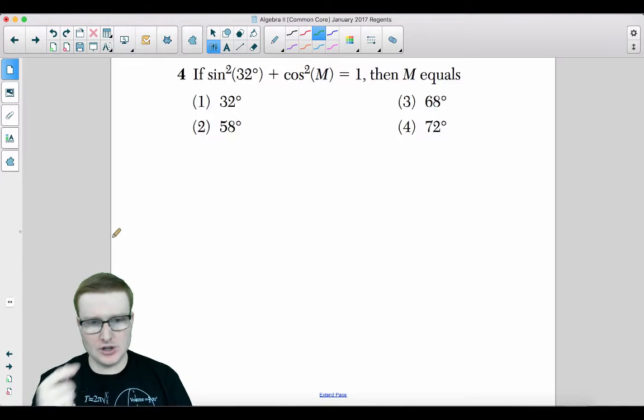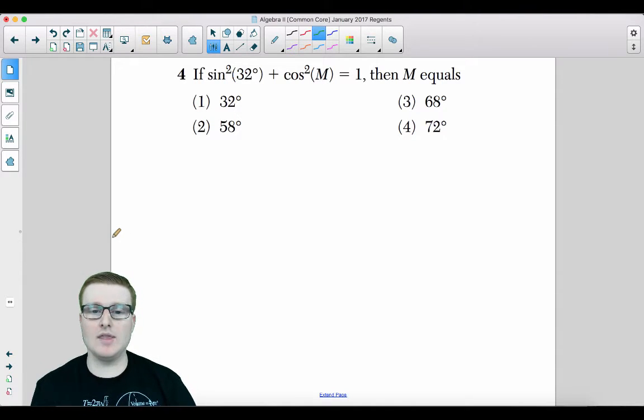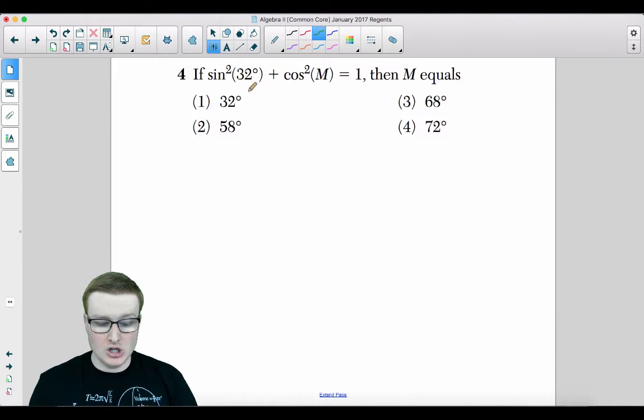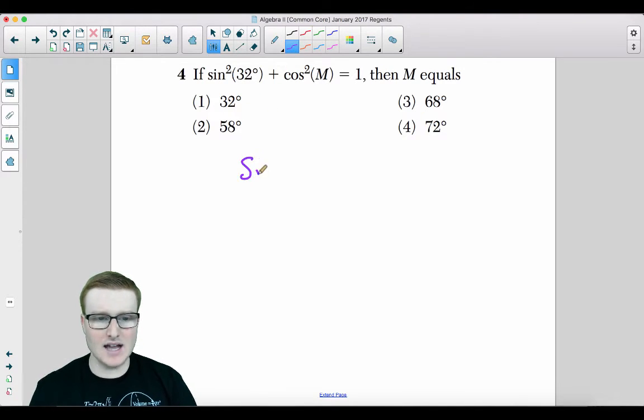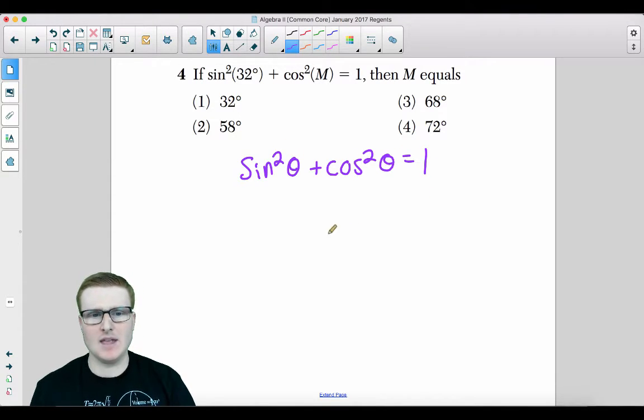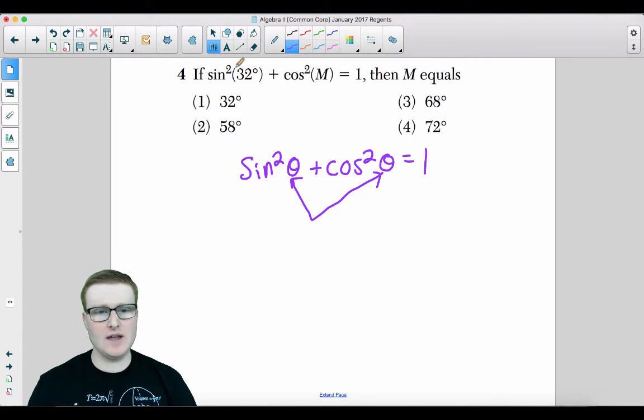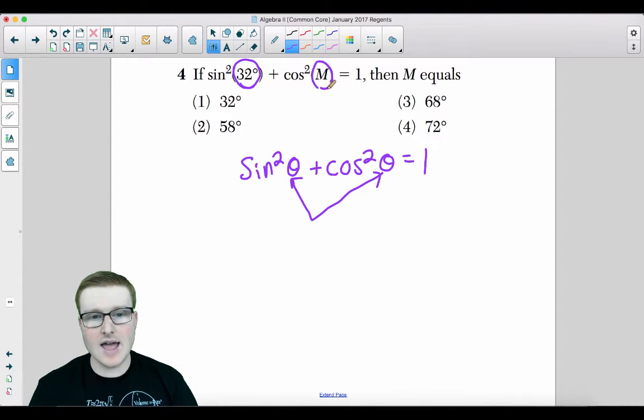Number 4. If sine squared of 32 plus cosine squared of m equals 1, then m must equal what? Do you remember the identity sine squared theta plus cosine squared theta equals 1? The thetas, theta is equal to theta. Theta must be the same. So if the sine squared of 32, if this is 32, then the letter m must also equal 32. Your answer is choice 1. And if you chose choice 2, you got confused.